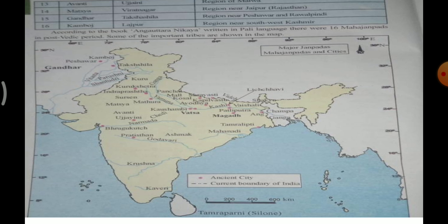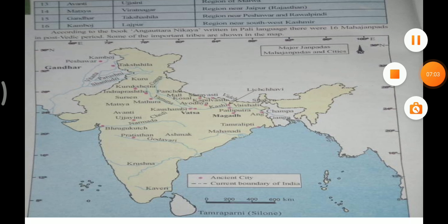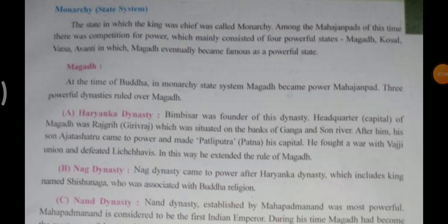Toh yeh sab jagah ka naam bataya gaya — pehle ka state tha aur map ke hisaab se kahaan tha. Neeche ek map diya gaya hai — ancient city/boundary map of India. Praacheen kaal mein is map mein kahaan-kahaan shahar the aur boundary kya thi. Yeh map jo hai apke Macbook mein se dekhke blank map ko aapko complete karna hai. Saath-saath jo 16 table mein alag-alag state ka naam padha, woh bhi aapko homebook mein karke batana hai.